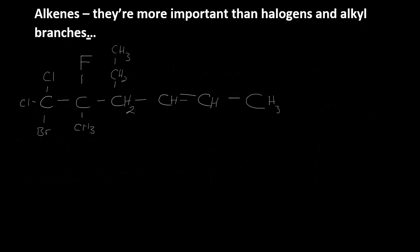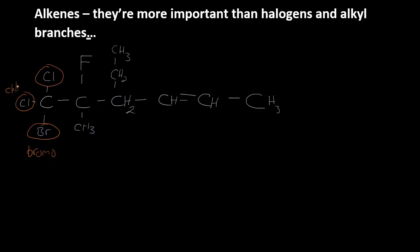Alkenes are more important than halogens and alkyl branches. Let's have a look at this sample molecule. I'm going to circle all the functional groups. So Br is bromo, and each of the Cls is chloro.